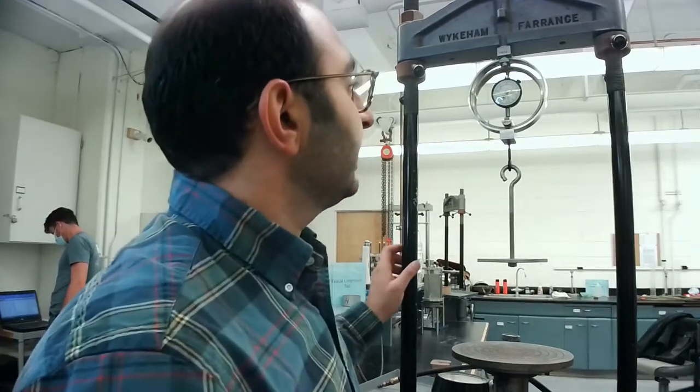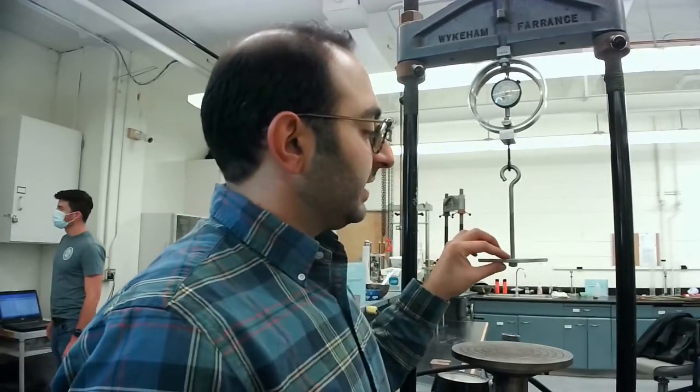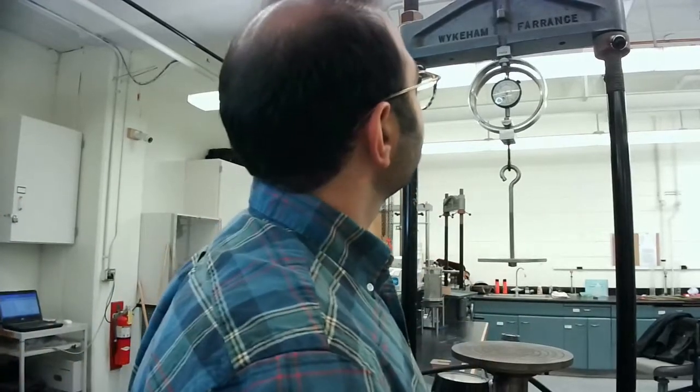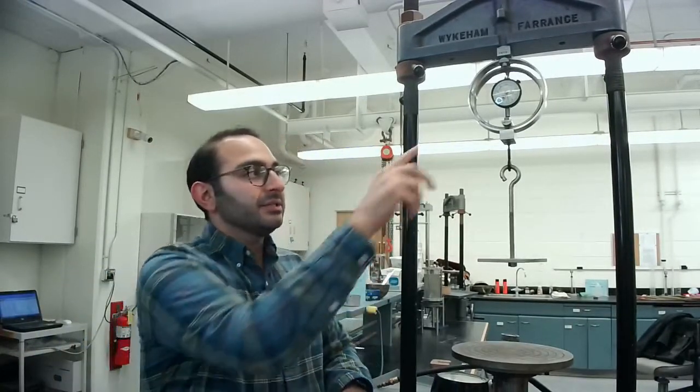I started off at six hundred and fifty-one with the hanger on, and now by loading and unloading I am at six hundred and forty-seven. So this was the process to calibrate the triaxial load ring.